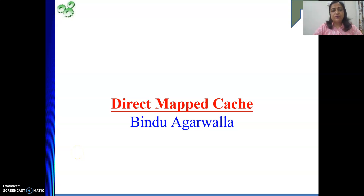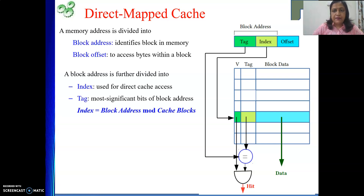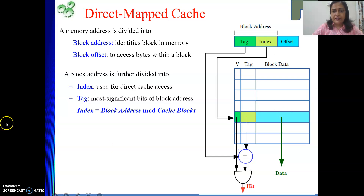Here we will continue our discussion on direct map cache. The main memory address has two parts: block address and offset. The block address tells which block contains your data item, and the offset tells where inside the block the data item is. The index field tells which particular block of the cache the data will be found in. We go directly to that cache index and check whether the tag stored in that block matches the tag of the incoming address. If they match and the valid bit is 1, we conclude a hit; otherwise it is a miss.